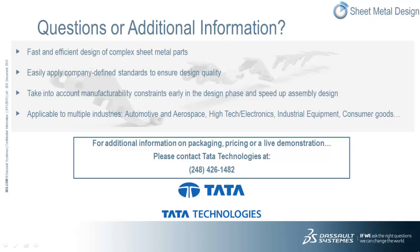CATIA sheet metal design is highly applicable to and heavily used across multiple industries. These include automotive and aerospace, high-tech and electronics, electrical, industrial equipment such as construction equipment, agricultural machinery and railroad, and consumer goods such as furniture, white goods, electronic goods, and other domains. In short, any company who designs and manufactures sheet metal parts such as supports, brackets, housings, structures, body panels, joining parts, and so on.